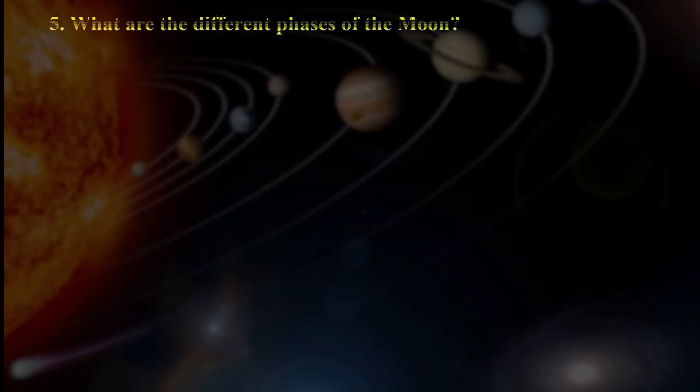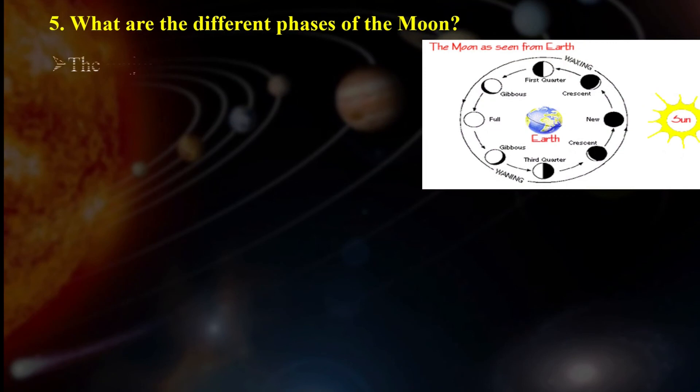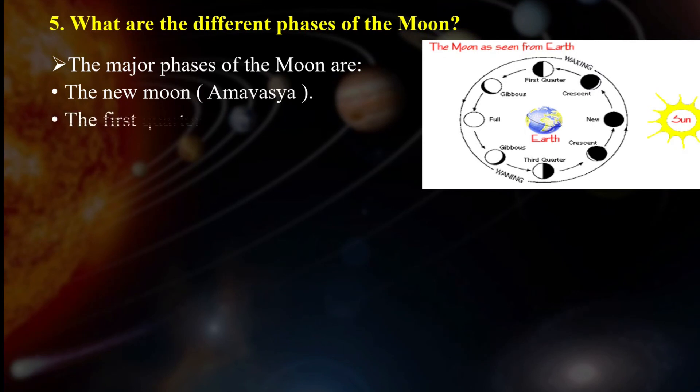Next, what are the different phases of the moon? The major phases of the moon are the new moon also known as Amavasya, the first quarter, the full moon also known as Purnima, and the last quarter. We also need to draw the diagram which is shown on the screen. You can also take the help of your books.